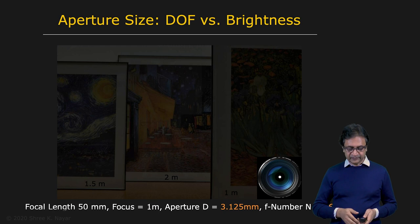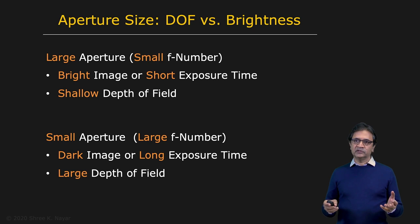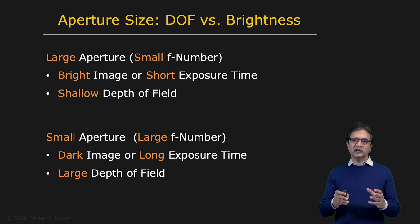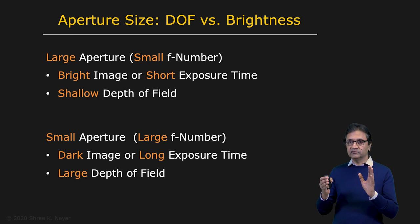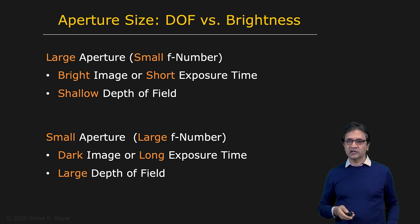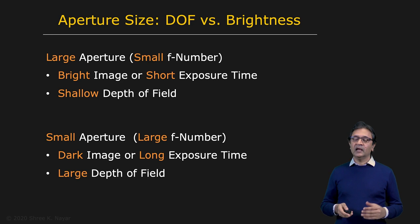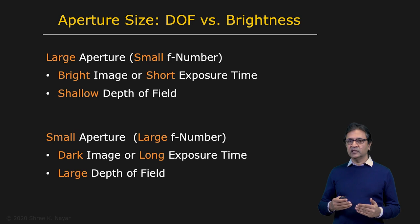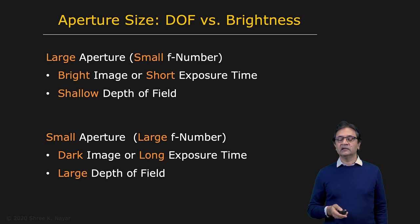We can summarize this trade-off: a large aperture — small F-number — implies a bright image, or in practical terms a shorter exposure time, allowing higher frame rates when capturing video. The price you pay is a shallow depth of field. On the other hand, a small aperture — large F-number — gives a darker image requiring longer exposure time, but you get a much larger depth of field.